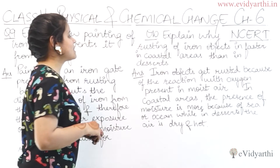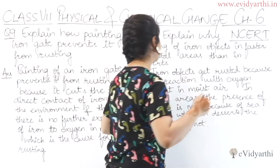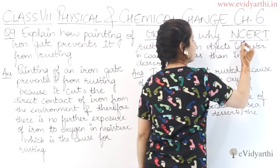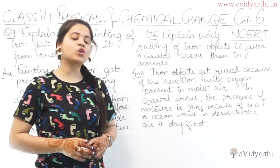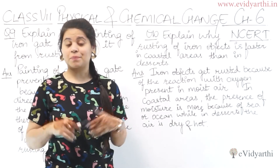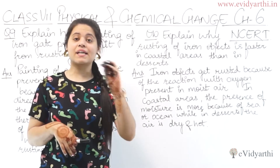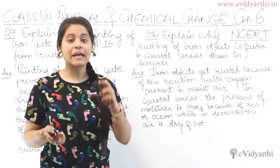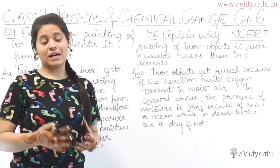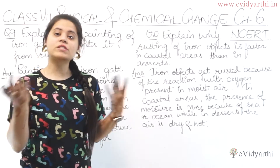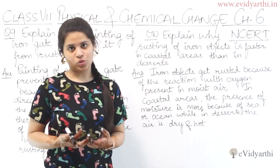Next, explain why rusting of iron objects is faster in coastal areas than in deserts. جو rusting of iron object ہے وہ coastal areas میں زیادہ کیوں ہوتی ہے اور deserts میں کم کیوں ہوتی ہے. Basic concept یہ ہے کہ rusting ہوتی کیسی ہے؟ Moisture سے، air سے. جہاں پہ زیادہ moisture ہے وہاں پہ زیادہ rusting ہوگی objects کی.